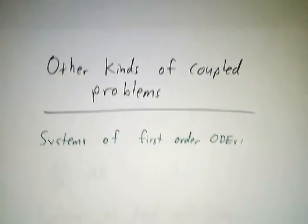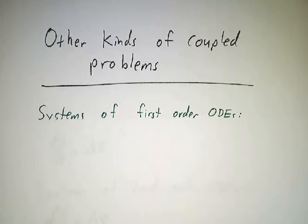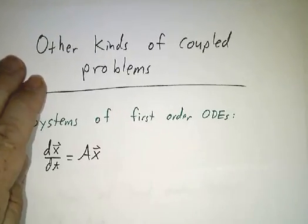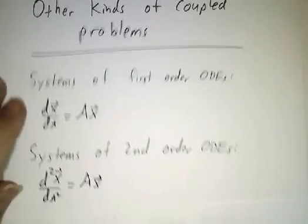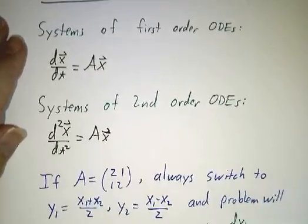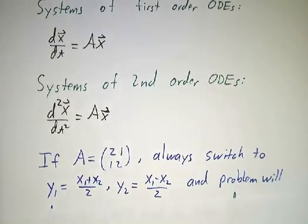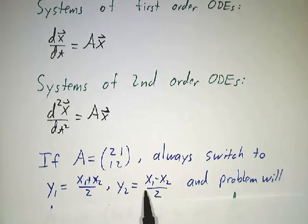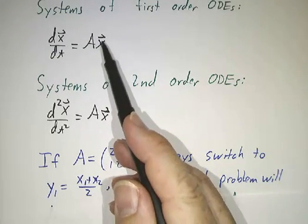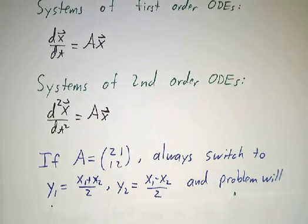So what's the moral of the story? Well, the kind of coupled problem I gave you isn't the only kind of coupled system that you'll ever see. You sometimes see systems of first order differential equations. Sometimes you see systems of second order differential equations. And the point is if the matrix was 2, 1, 1, 2, you would always use these particular changes of coordinates. The change of coordinates doesn't depend on whether you're talking about a difference equation or first order differential equation or second order differential equation, whatever. It's really a property of the matrix only.